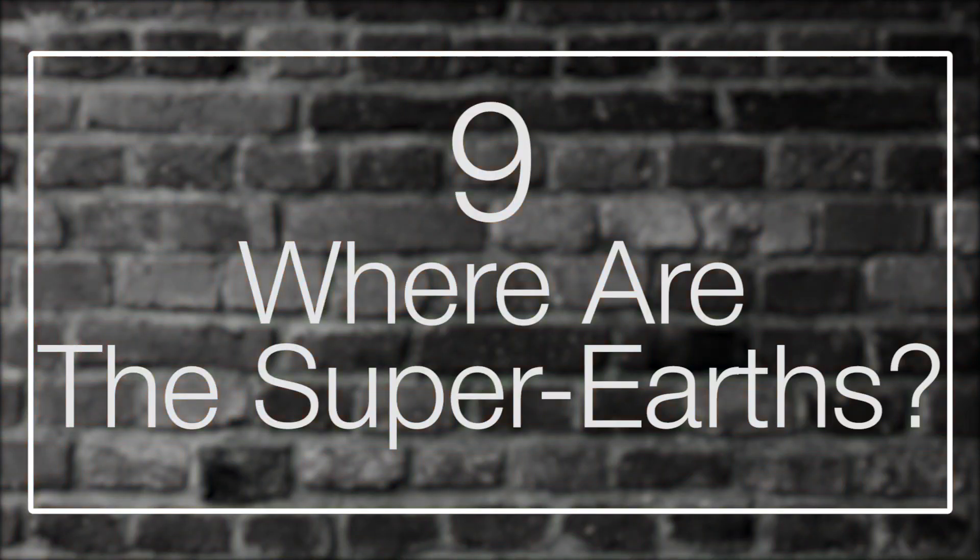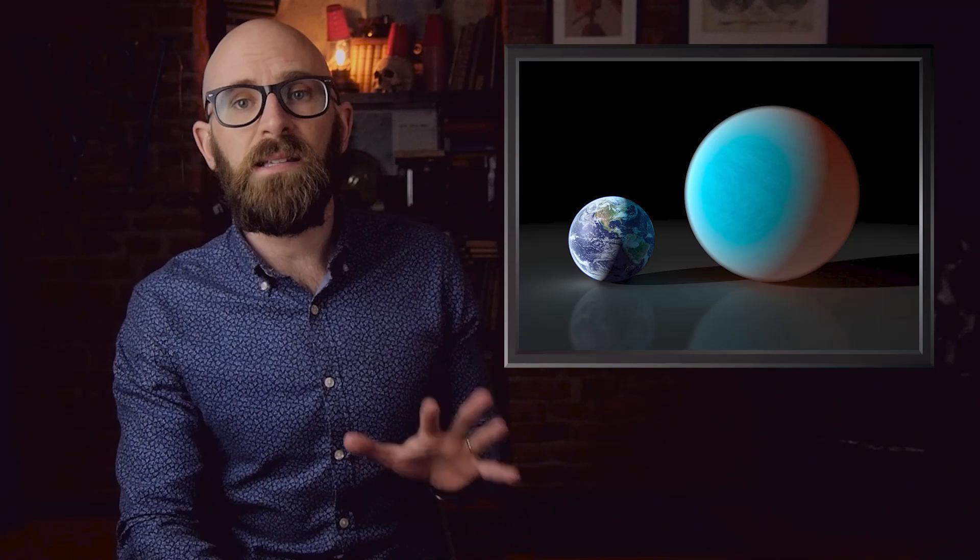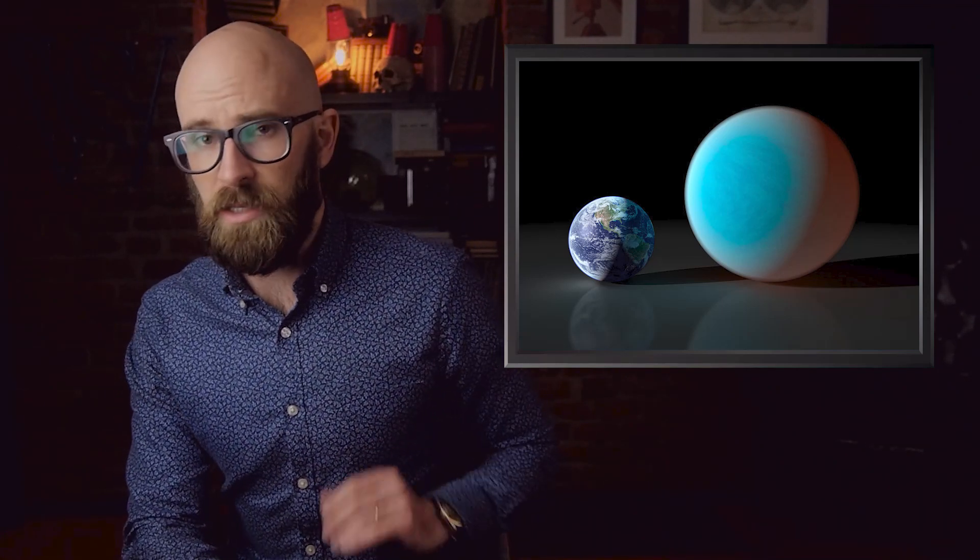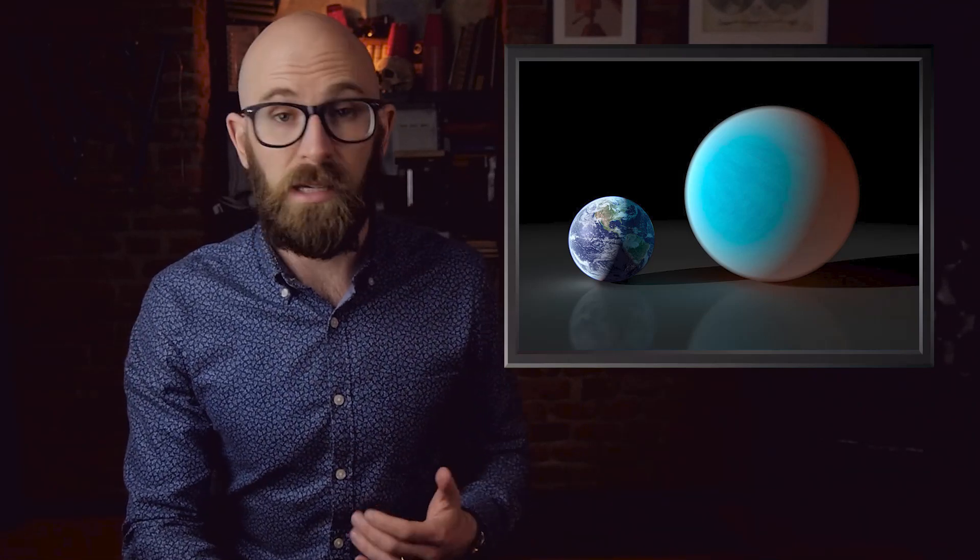9. Where Are the Super-Earths? Super-Earths are massive rocky worlds, which are often twice as large as our Earth, and they can get even larger than that. We've discovered that 30-50% of exoplanets observed are close-orbiting super-Earths. Their prominence has gotten scientists wondering why there aren't any in our solar system.